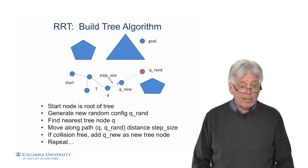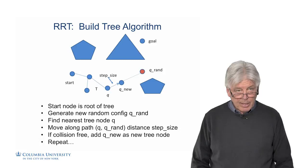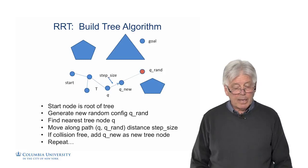Then we repeat this. The tree will continue to grow each time by generating a new random sample, finding the nearest neighbor, connecting to the tree, and moving out a step size from it and growing the tree by a little bit each time.